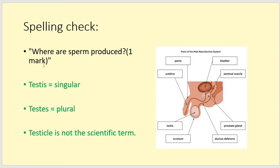Next question — this is a spelling check. I know it's annoying, but you do actually get marks for spelling in your GCSE, and we are going to get the basic things sorted out now so we don't have to stress about them later. The question was: where are the sperm produced? One mark. You have 'testis' — T-E-S-T-I-S — which is the singular. I remember it's singular because it's got an I in it, just like 'single' has. 'Testes' — T-E-S-T-E-S — are the plural. There's a diagram on the right-hand side here; if you need to check any of the other vocabulary, you've got all the spellings there as well.